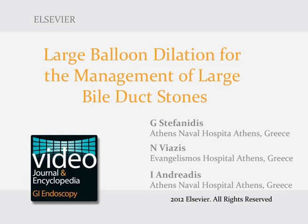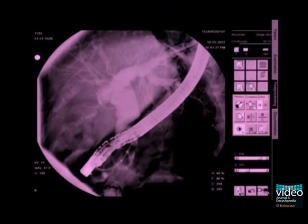A radiology image showing the occlusion cholangiogram performed after the stent removal. The dilated common bile duct with the filling defects can be seen.